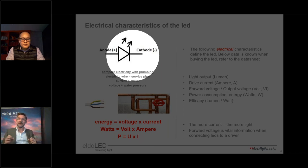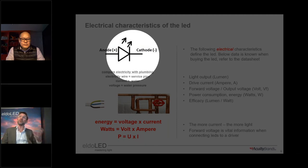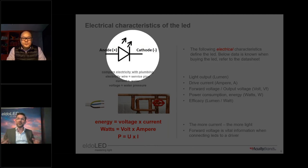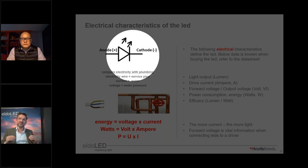The second crucial point in electricity is voltage, measured in volts — like water pressure in a plumbing system. If your hose is very thin and a lot of water runs through it, the water pressure is very high; a similar thing happens in electricity. If you multiply voltage and current — volts times amps — you get power, measured in watts. This is crucial because if people invest in LED lighting, this is where energy consumption comes in; the whole green aspect of LED lighting depends on this.